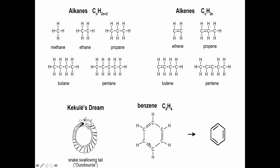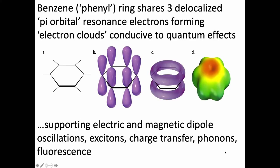There are three extra electrons in benzene, and the electrons in the pi orbitals coalesce into rings — a pi electron cloud covering the whole molecule. This is a cloud of delocalized electrons, therefore conducive to quantum effects, including magnetic and electric dipole oscillation, excitons, charge transfer, phonons, and fluorescence. This is where quantum stuff can happen, regardless of the temperature.